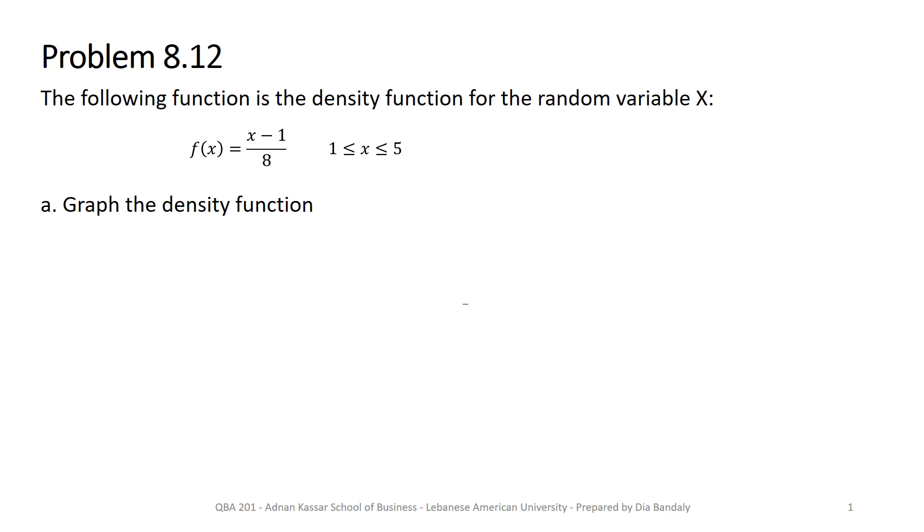In this problem we are given the probability density function and we are asked first to graph it, and in other parts we're going to find probabilities which of course as you can guess we're going to find the areas under this PDF curve. That's why it's very essential that as a first step to find probabilities we need to know how to plot these PDFs. So we are given that a PDF for a variable x is given to be f(x) equal to (x-1)/8 for an interval of x between 1 and 5. It's very important to identify the domain of x or the interval within which x can have its values. So here this PDF is applicable for this range.